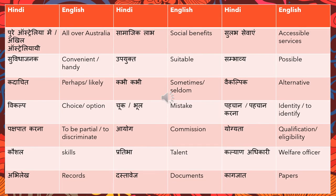Puray australia me or akhil australiai means all over Australia. Samajik lab means social benefits — samajik is social and lab means benefits. Sulab sevay means accessible services — sulab is accessible and sevay means services. Suvidha janak means convenient or handy. Upyukt means suitable. Sambhavya means possible. Kadachit means perhaps or likely.